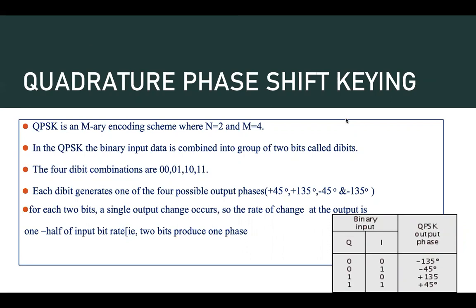So what is quadrature phase shift keying, or QPSK? In case of BPSK, that is binary phase shift keying, we transmit only a single symbol — either a 0 or a 1. A 0 is represented by a phase shift of 0 degrees and a 1 is represented by a phase shift of 180 degrees.